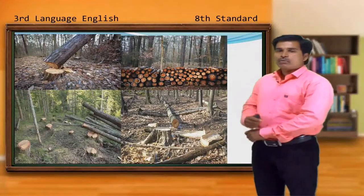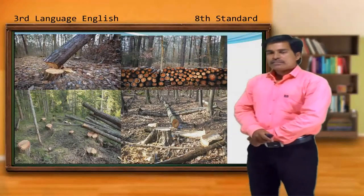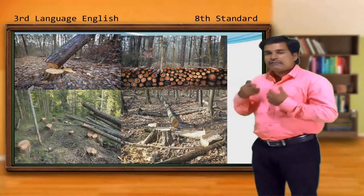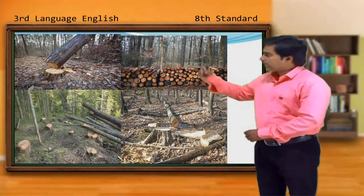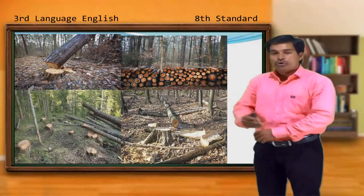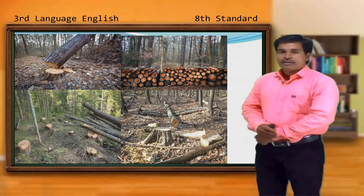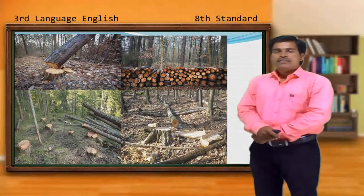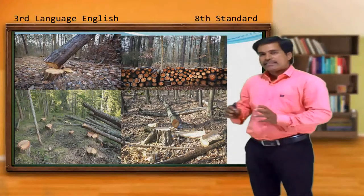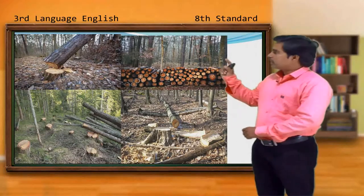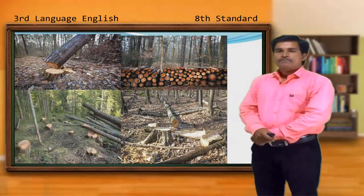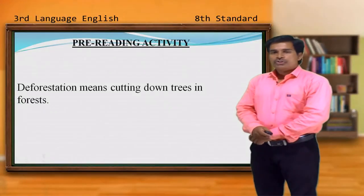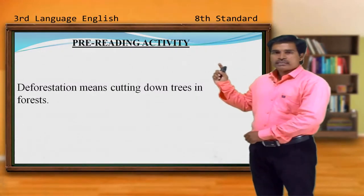Now observe all the pictures together. If we human beings are indiscriminately cutting down the trees for our selfish needs, just try to understand what's going to happen tomorrow. What will the situation be? Just observe these four pictures — how indiscriminately human beings are cutting down the trees. All together, we can say this comes under the category of deforestation. Let us watch a small video about deforestation and then we'll come back.